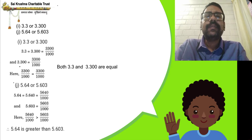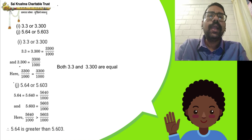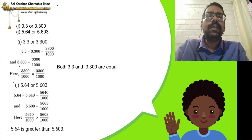Which is greater, 5.64 or 5.603? Whole number part: 5 and 5, same. Tenths part: 6 and 6, same. Hundredths part: first decimal has 4 and second has 0. Since 4 is greater than 0, therefore 5.64 is greater than 5.603.